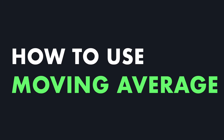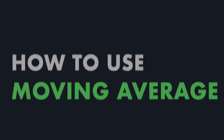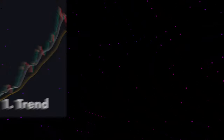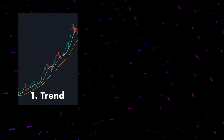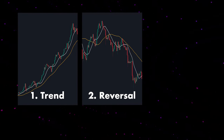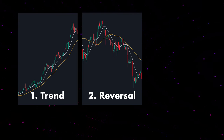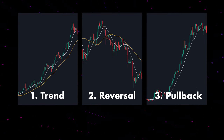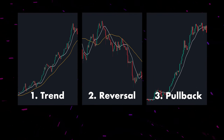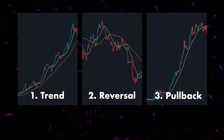Let's venture beyond the surface and explore the applications of the moving average that empower us to make better trading decisions. The moving average serves three primary functions: firstly, it helps identify the trend of an asset; secondly, it assists in detecting shifts in the prevailing trend; and thirdly, it aids in pinpointing areas of support and resistance on the price chart.